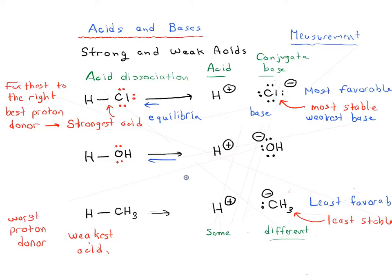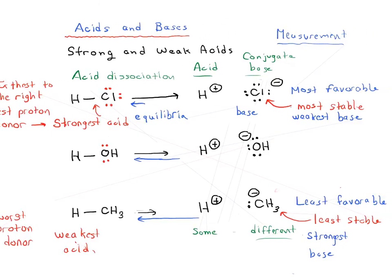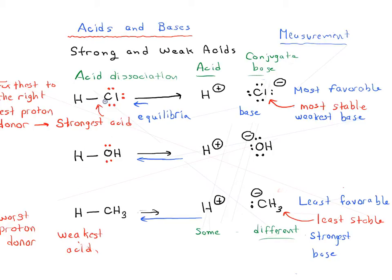Going further along, H plus and OH minus — this is going to be slightly more favorable; in fact significantly more favorable, where OH minus can associate with H plus to give water. And of all three, CH3 minus associating with H plus to go right to left is the most favorable — so CH3 minus is actually the strongest base. A strong acid gives us a weak, most stable conjugate base. A weak acid gives a very unstable conjugate base, which is the strongest base. You can see how acidity and basicity are related.